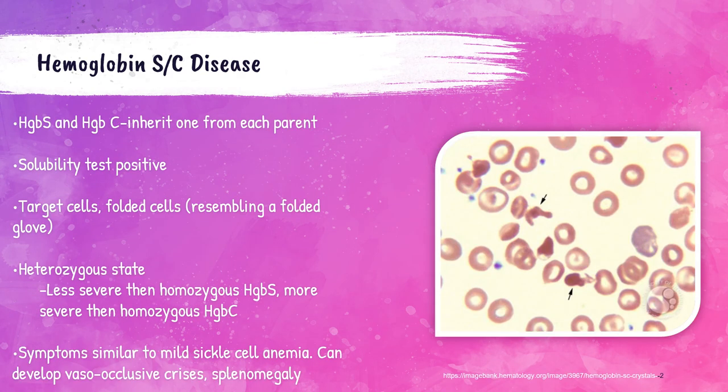Hemoglobin SC disease occurs when a patient inherits one copy of hemoglobin S and one copy of hemoglobin C — one from each parent. Hemoglobin SC crystals can be curved rectangles or bizarre shapes that look like mittens or fingers, and target cells are frequently seen on the peripheral blood smear. Patients with hemoglobin SC disease will have symptoms of mild sickle cell anemia and can develop vaso-occlusive crises and enlargement of the spleen.